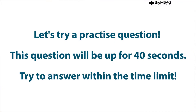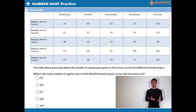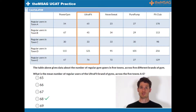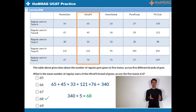For example, let's refer to the following table. The answer is D. To find the mean number of regular users of the Ultrafit brand of gyms across the five towns A to E, simply add up 65, 45, 33, 121 and 76 to get 340. Now divide by five, as there were five numbers we were adding together. 340 divided by five is 68.